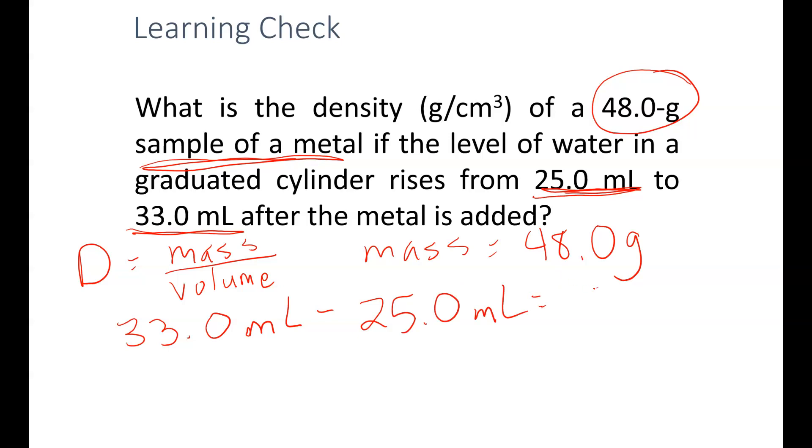Subtract that through and I get 8.0 milliliters. So my density is going to be 48.0 grams divided by 8.0 milliliters, or 6.0 grams per milliliter.